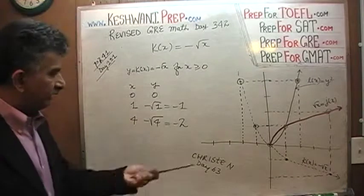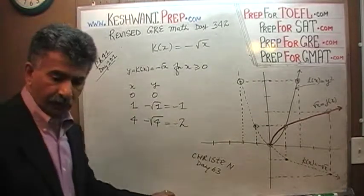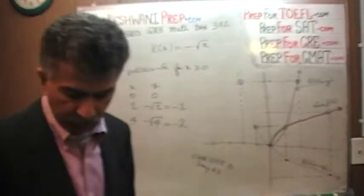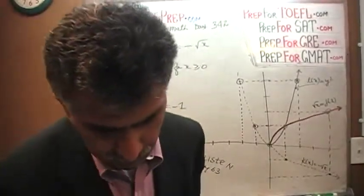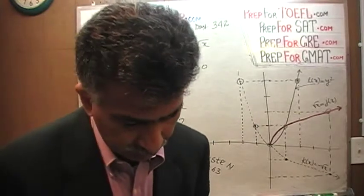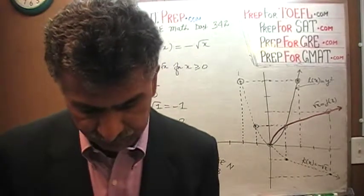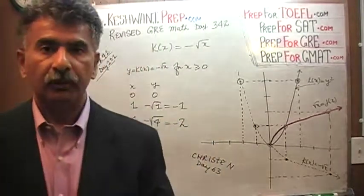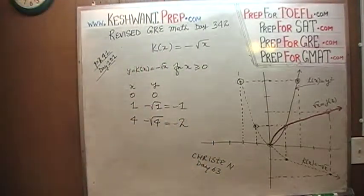That's about it — we're done. That's the graph, that's what it looks like. I will see you tomorrow where we'll continue our journey on the next page, dealing with two more graphs: a parabola and a piecewise function. We'll talk about those tomorrow.